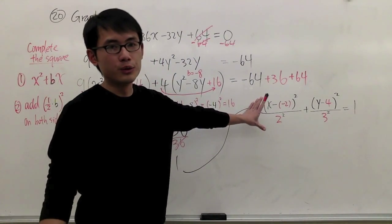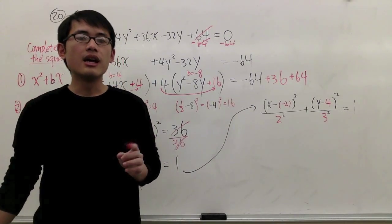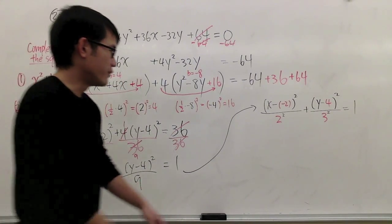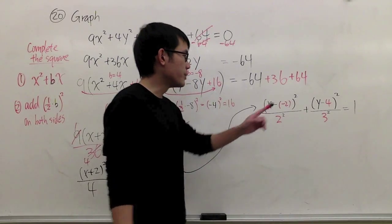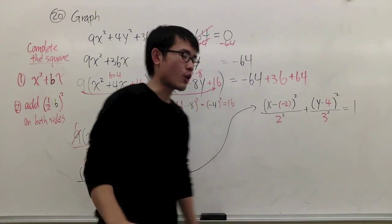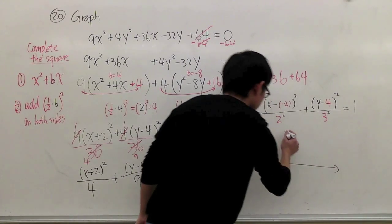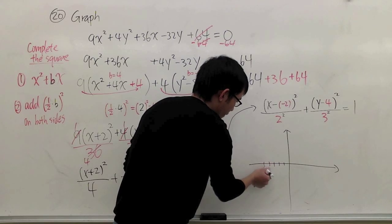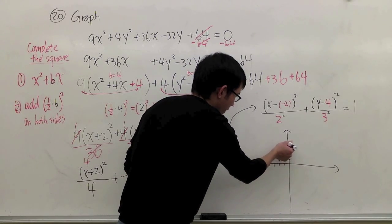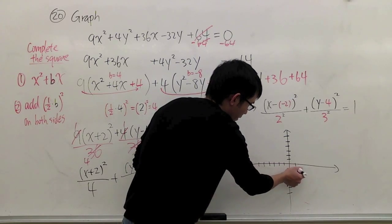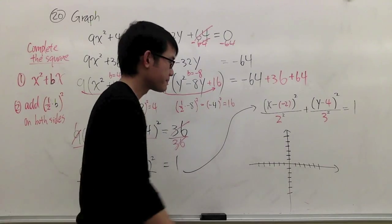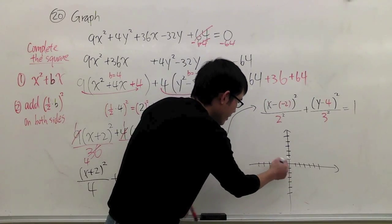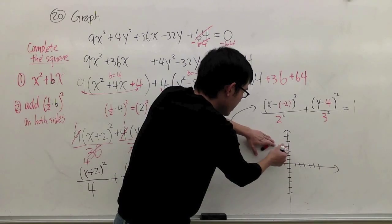This equation tells us the center and how far left, right, up, and down we have to go to get our graph. The center is going to be at negative 2, positive 4. Let me make the graph look nice — marking off units on each axis — and plot the center at negative 2, positive 4, which is right here.